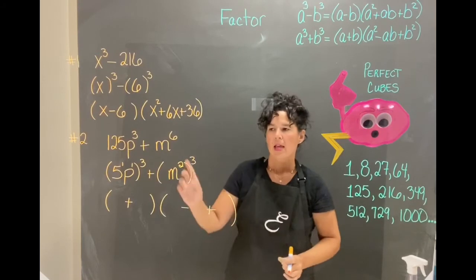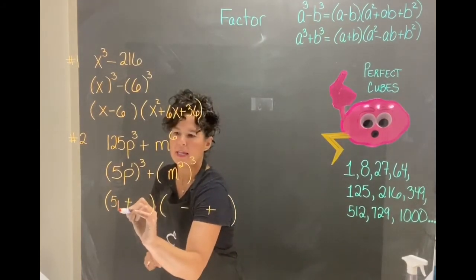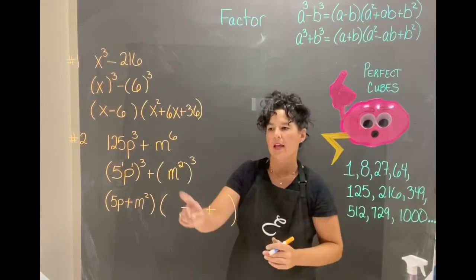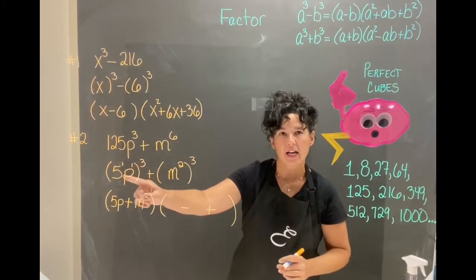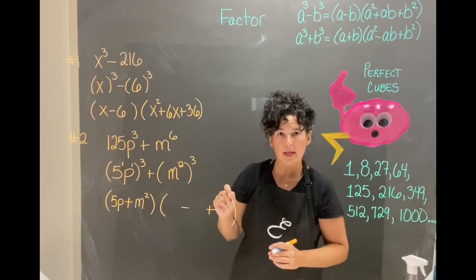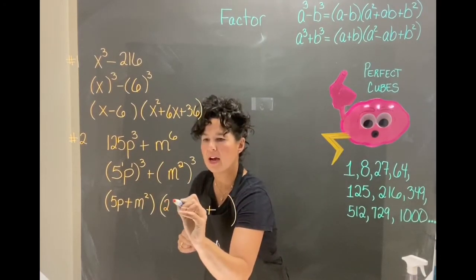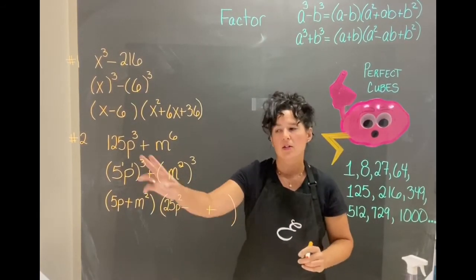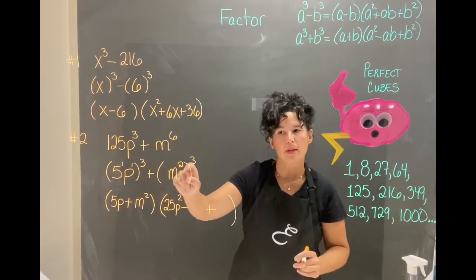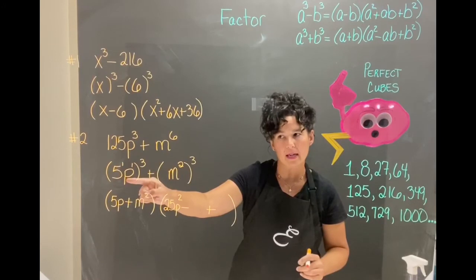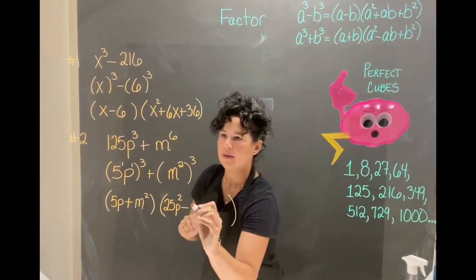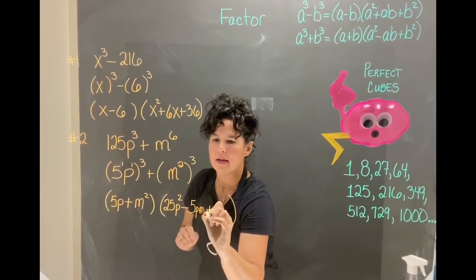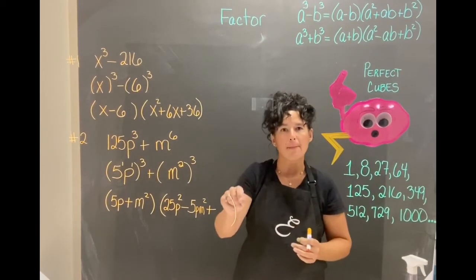a plus b is going to be 5p plus m squared and then a squared so 5p times 5p is 25p to the second power minus ab so a is 5p and b is m squared so 5p multiplied by m squared is 5p m squared.